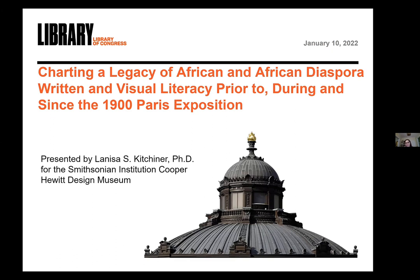Leading up to this moment, Du Bois is immersed in German studies — reading plays by Schiller, Kant's Critique of Pure Reason, and has been exposed to Gustav von Schmoller, Adolf Wagner, Heinrich von Treitschke, and Max Weber, among others. He returns to the United States in 1895 to finish a PhD at Harvard. The subject of his dissertation is on the suppression of the slave trade to the United States from 1638 to 1870, which becomes his first published book.